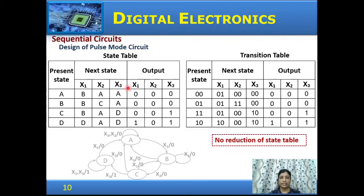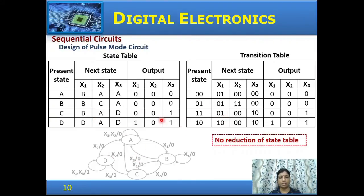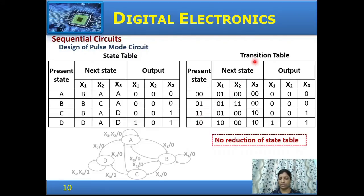For this state diagram, the state table and transition table are obtained. There are four states, and for inputs x1, x2, x3 the next state and output are filled from the state diagram. There are no equivalent states, so there is no reduction. Binary values are assigned using two flip-flops for the four states, giving us the transition table.